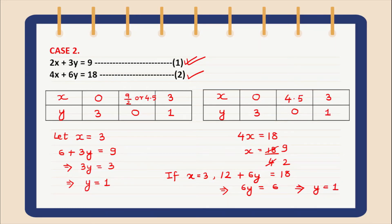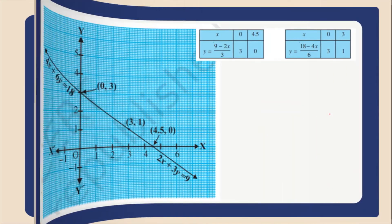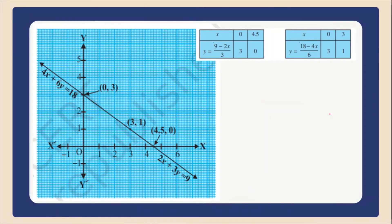Now we will plot these two solution tables on graph and you will get something like this. You can clearly see that both these lines are coinciding. So in this case, we will have infinitely many solutions.